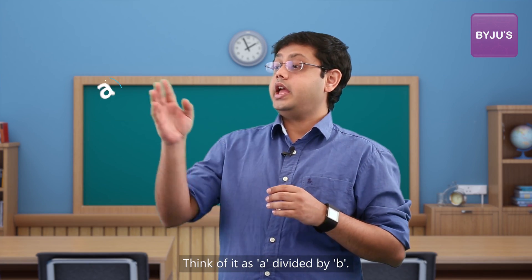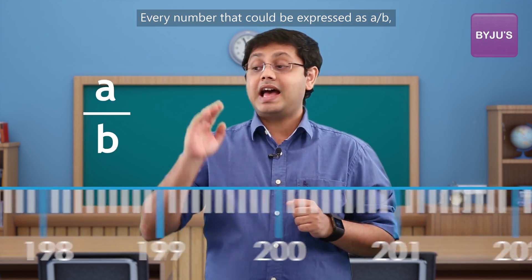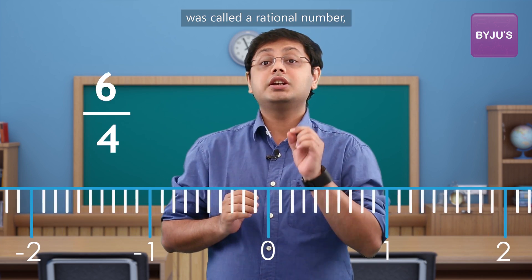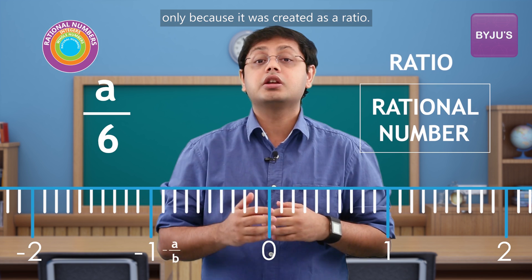Think of it as a divided by b. Every number that could be expressed as a by b was called a rational number only because it was created as a ratio.